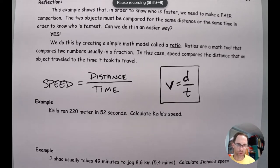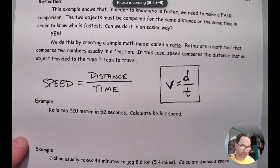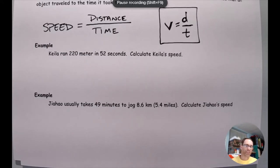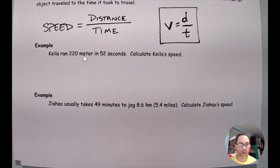Let me do two quick examples to show how you would use this concept to determine the speed of something. Early in this series I really want to emphasize organizing the information and identifying what properties I was given and which letter symbolizes them, so that the math part is easier. The first problem says Kila ran 220 meters in 52 seconds — calculate Kila's speed. I don't see the word 'distance' in the problem, but I see 220 meters, and meters is a unit of distance, so D equals 220 m.